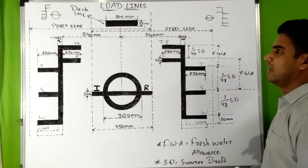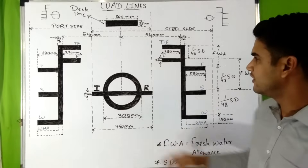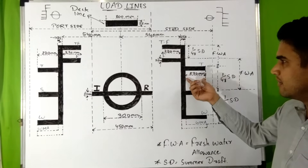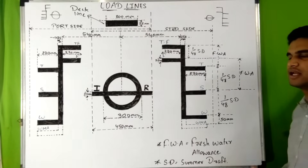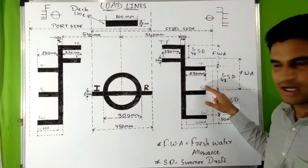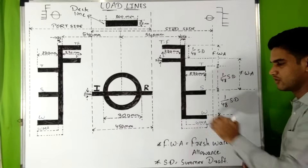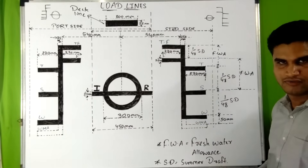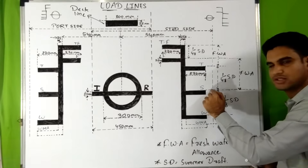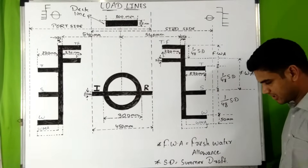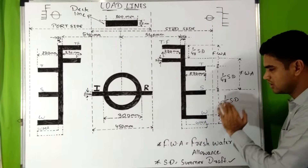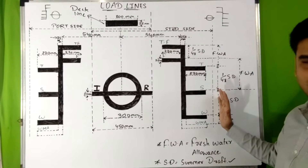Exactly 540 mm forward of the center of the Plimsoll mark, we have a vertical line of 25 mm thickness with horizontal lines of 230 mm length and 25 mm thickness perpendicular to it. These are the zone markings. S is for summer zone — a ship can be loaded up to the upper edge of this marking in salt water. T is for tropical zone and W is for winter zone. The height difference between the top edge of the tropical zone and the top edge of the summer zone is 1/48 of the summer draft, and similarly from the summer zone to the winter zone.